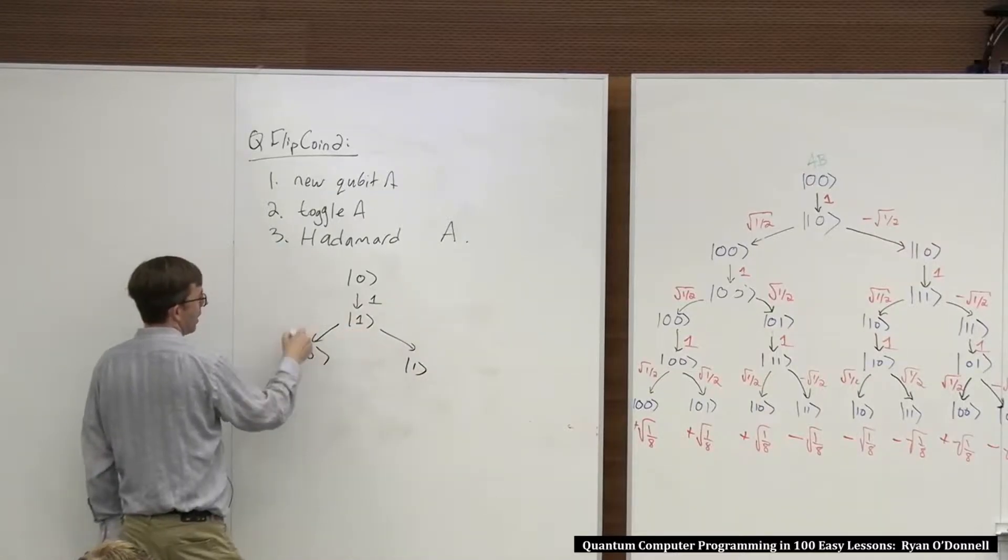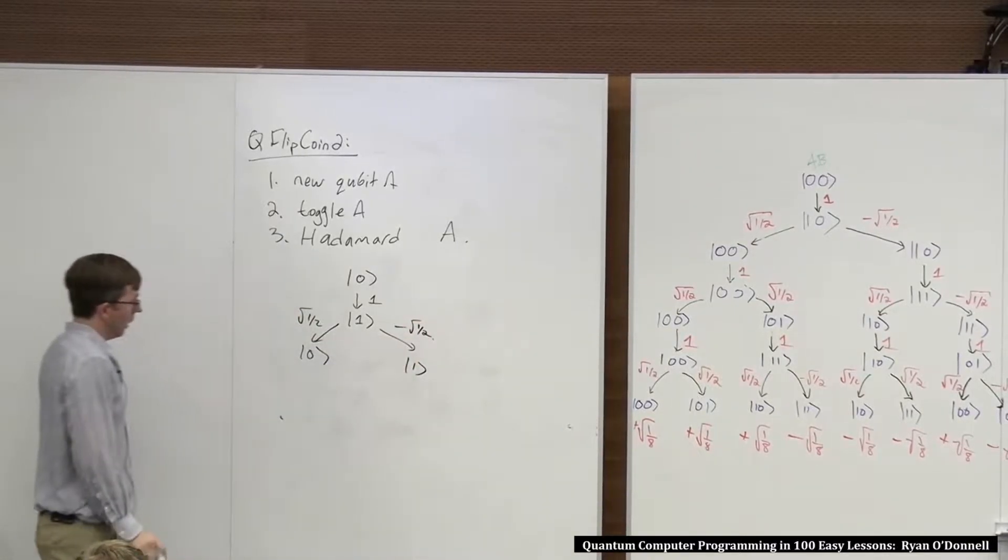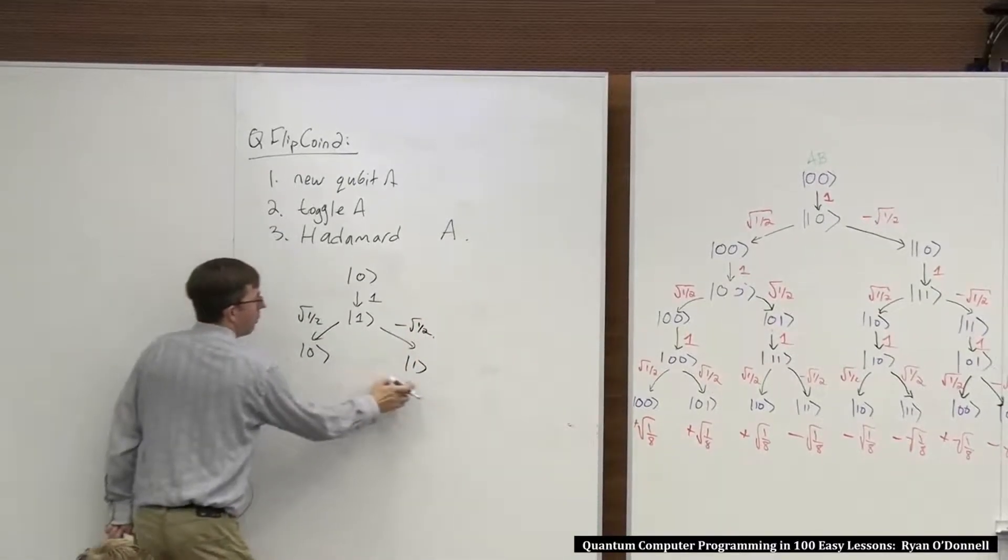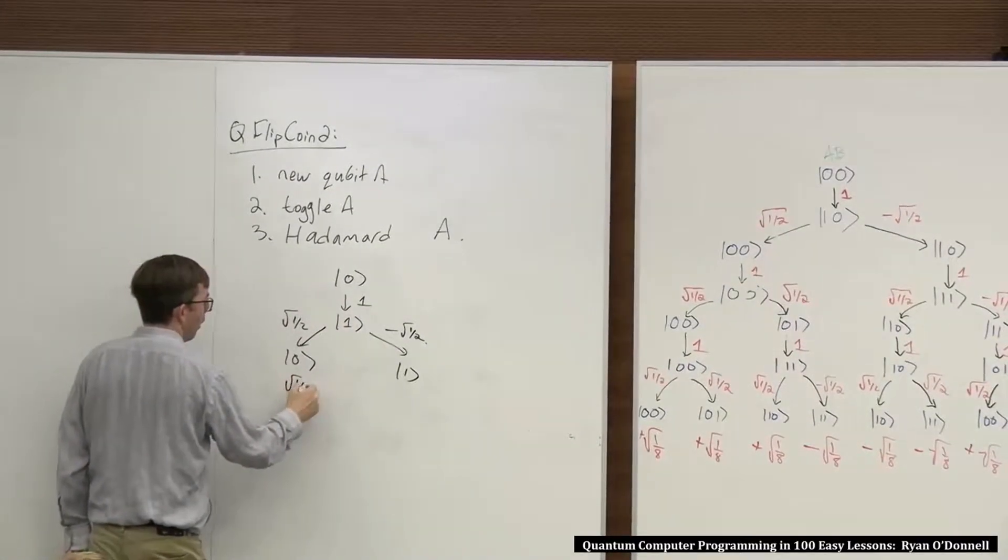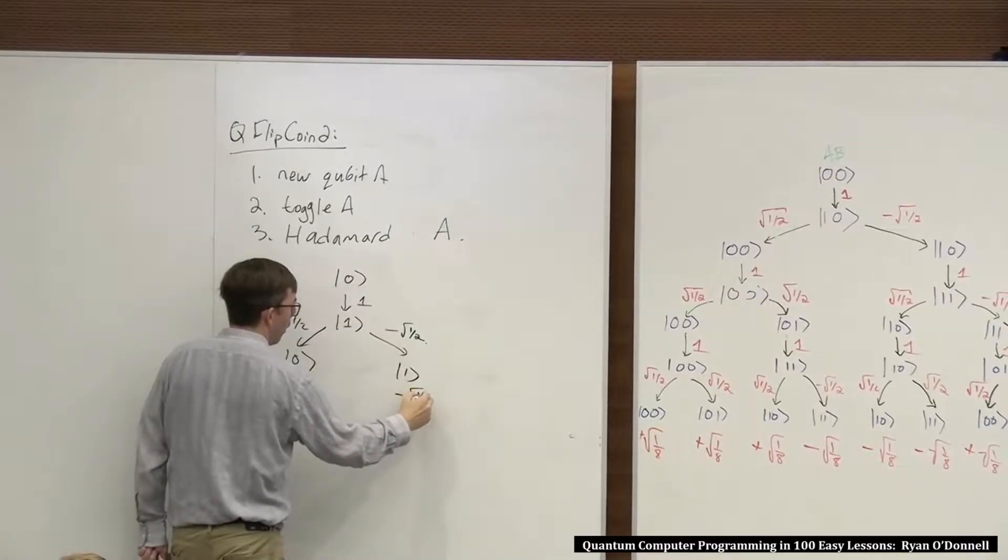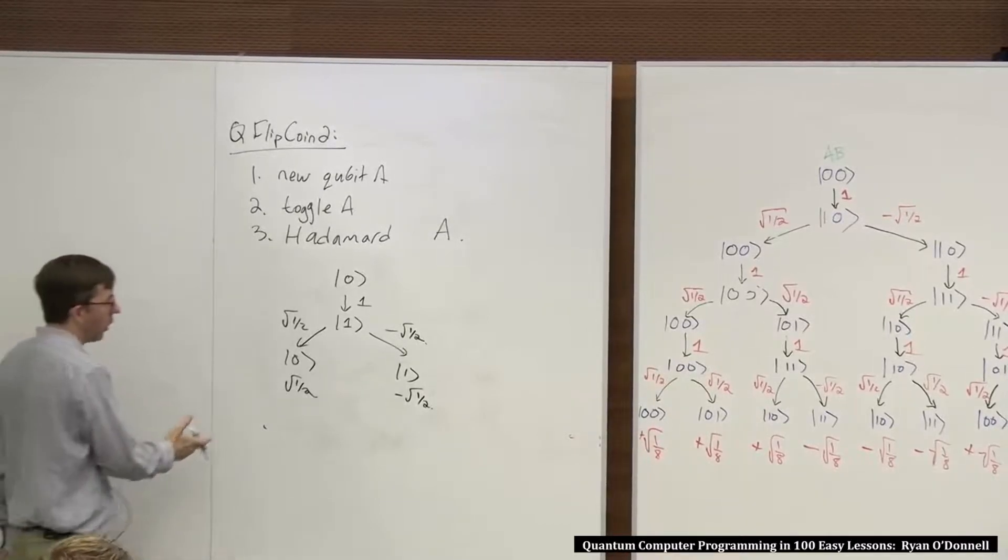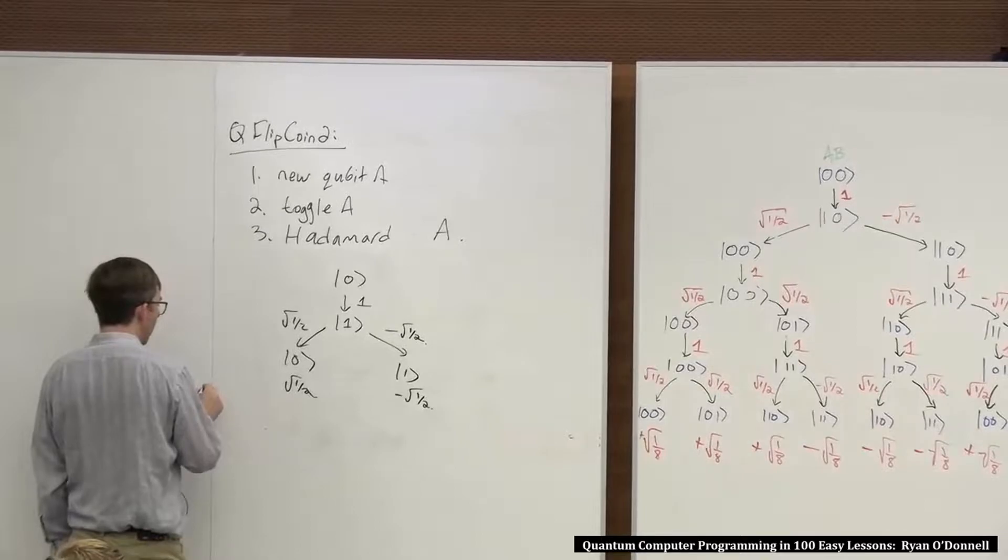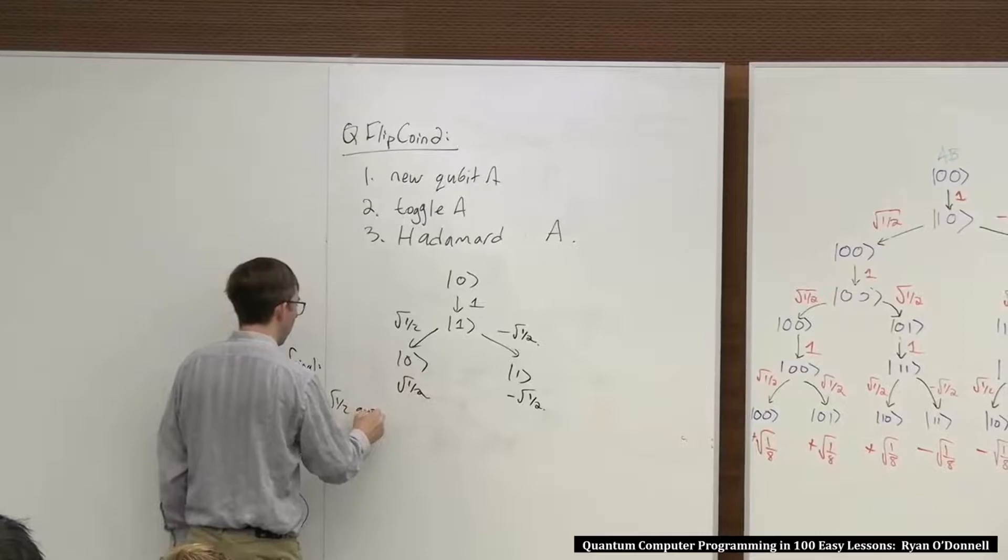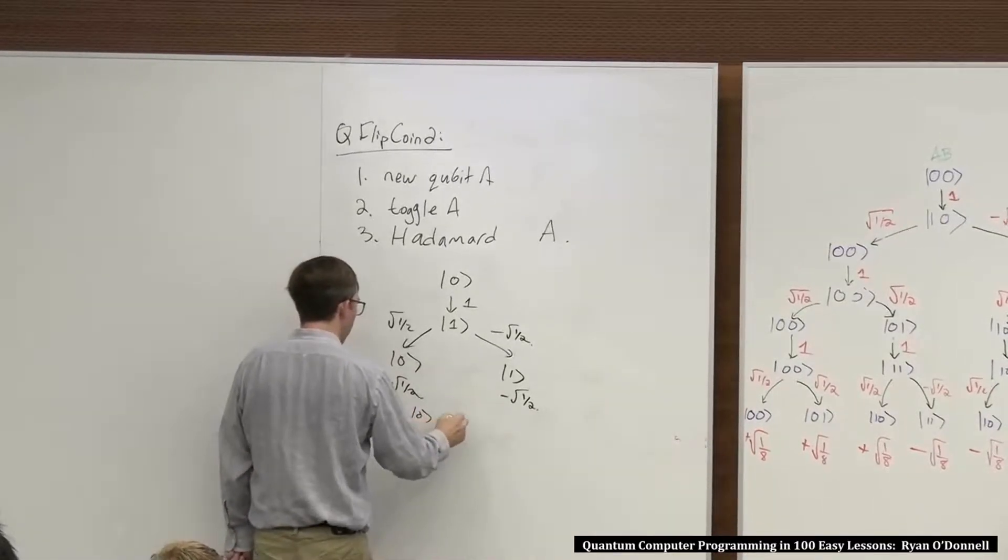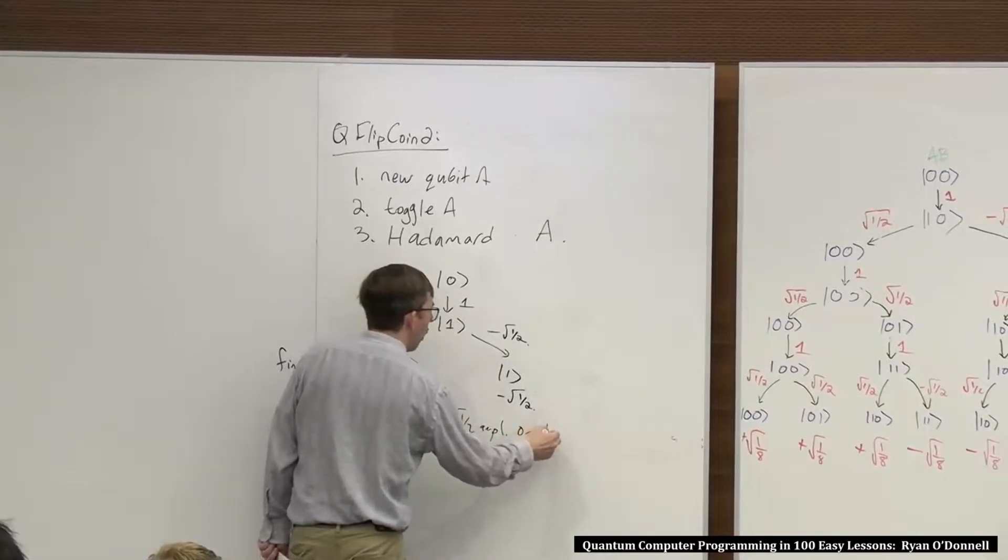With Hadamard, 1 goes to 0 with amplitude root 1 half, and 1 goes to 1 with amplitude root minus 1 half. Now we write the final amplitude outcomes at the bottom. Here we got 1 times root 1 half. Here we got 1 times minus root 1 half. The final state is root 1 half amplitude on 0, minus root 1 half amplitude on 1.